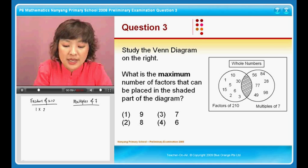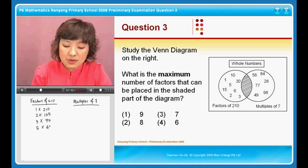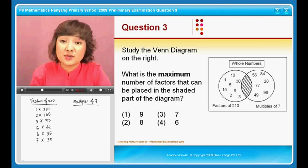So it's 1 times 210, 2 times 105, 3 times 70, 4 is not possible, 5 will be 42. And what about 6? 6 is 35. Then we have 7, 7 is easy, 7 times 30, because 7 times 3 is 21.